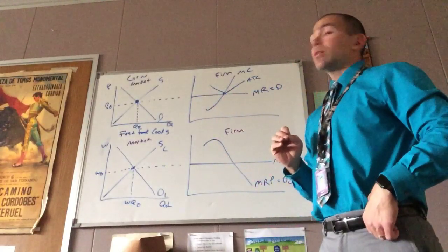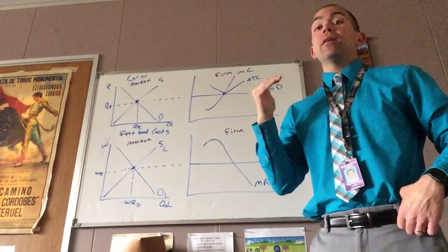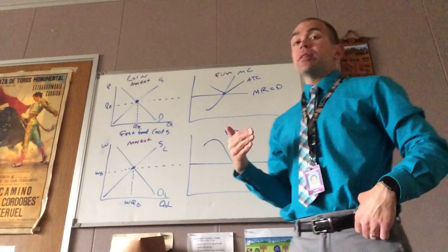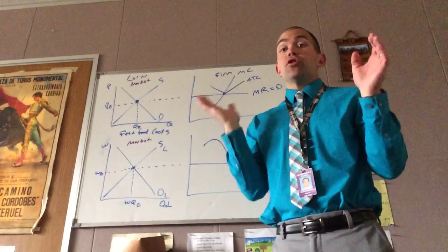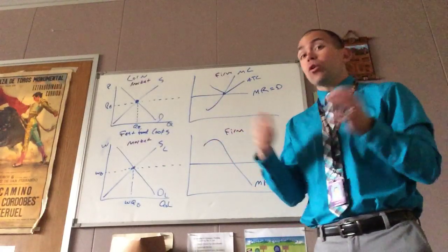So in my unit three, we take a look at perfect competition. Corn would be a great example of a perfectly competitive market because it has relatively low barriers to entry and there's no product differentiation. So the firm becomes a price taker. Corn is corn.